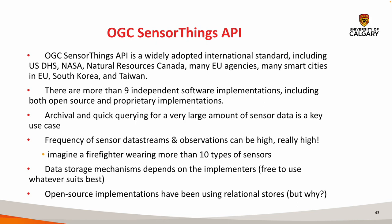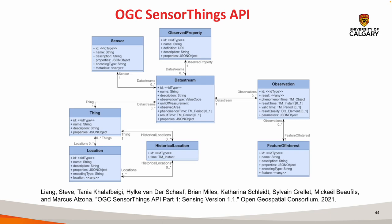Here's the data model — that's where the strength of the standard is. It's really simple: you've got sensors, they have data streams coming in, and each data stream is essentially time series data of a certain observation. There are important attributes for those, and the ability to customize data with a properties attribute in each entity.